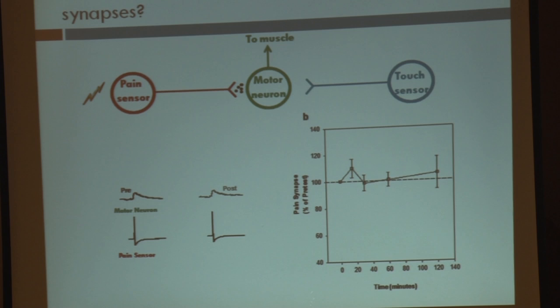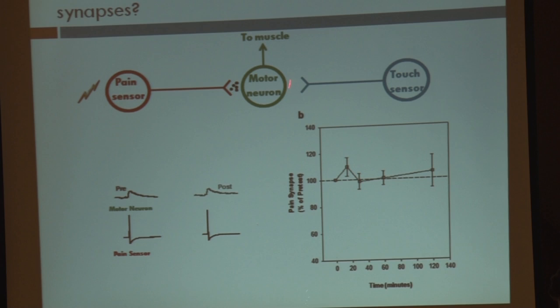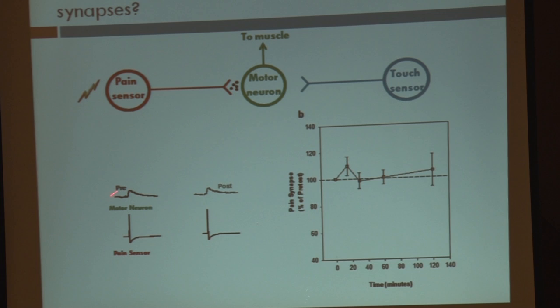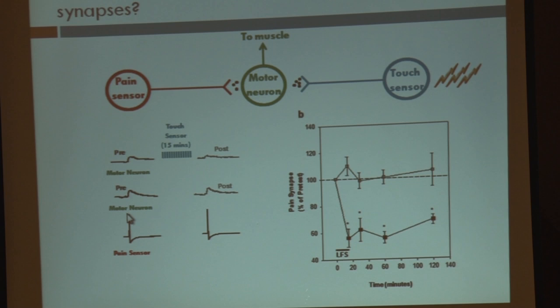One of the first things we wanted to look at was this gate control process at the synaptic level in the leech. If you activate a pain sensory cell, that causes the release of neurochemical transmitters that produce an electrical response in the target cell — in this case, a motor neuron. If we test this synaptic connection over a period of time, it stays relatively stable. But if we drive a touch sensory cell repetitively, like you would use for a TENS unit, for 15 minutes, you get a reduction in that synaptic communication of about 50%, and it lasts for at least two hours, maybe longer.